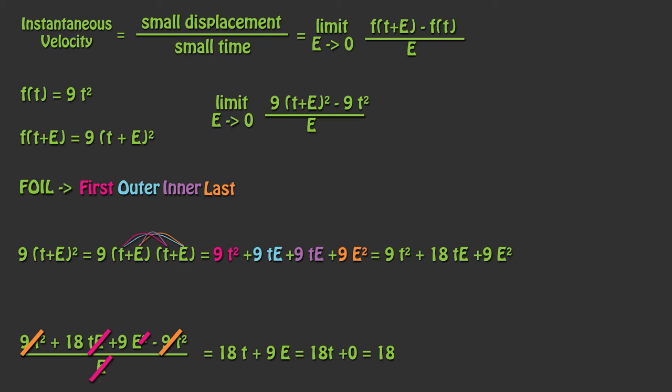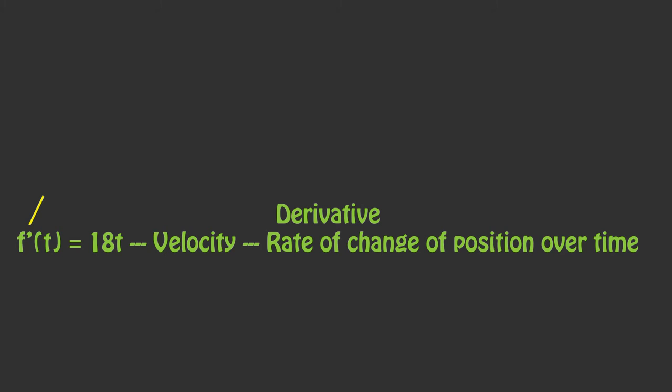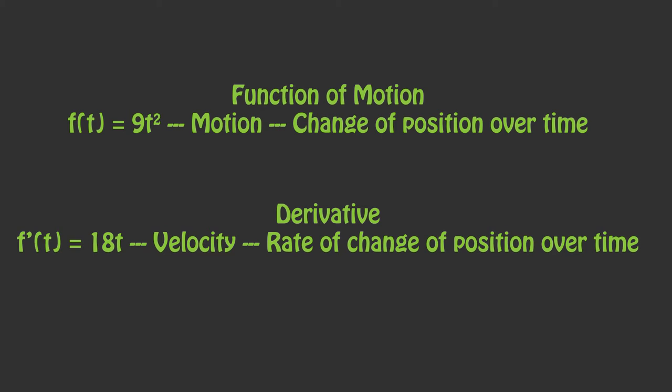This new function is our velocity at the point we are trying to converge on. This function is called the derivative of the original function and is often marked with an apostrophe. This is known as a prime. f of t is 9t squared and this tells us how the distance is changing over time. f prime of t is 18t and this tells us how the velocity changes with respect to time.